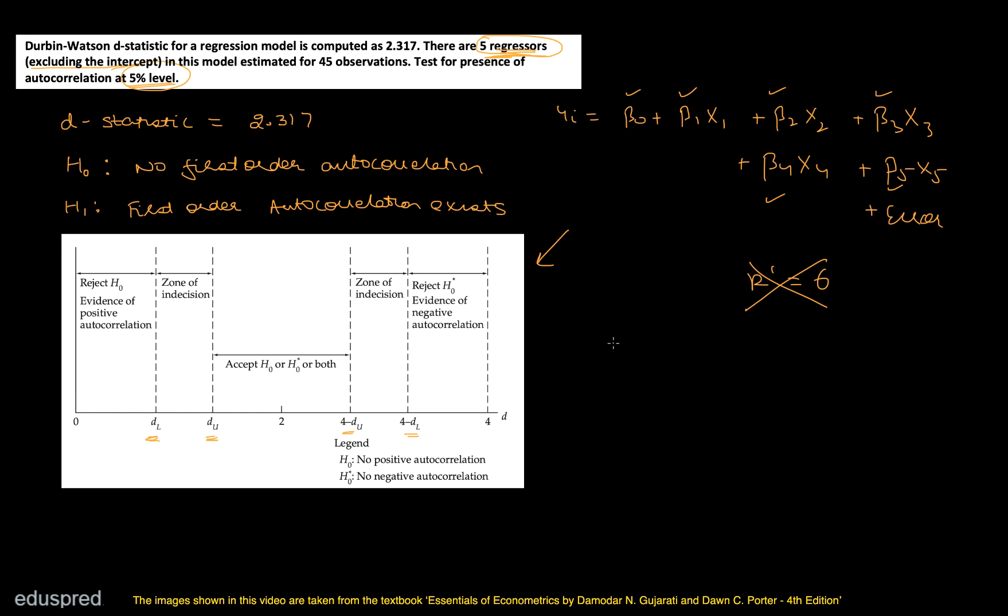Because K' is your number of independent variables excluding the constant term. That means you only have to count beta1, beta2, beta3, beta4, beta5. You do not have to count beta0. Or in other words, you only have to count the number of independent variables that you have. So over here, you have five independent variables. That means your K' is going to be equal to five.